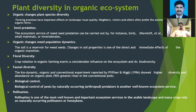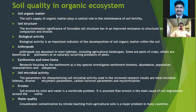Faunal diversity: the biodynamic, organic, and conventional experiment reported by Finnas and Negli showed higher diversity and abundance in organic plots — 90 percent greater than in conventional plots. Biological control of pests by naturally occurring predators is another well-known ecosystem service. Pollination is one of the most well-known and important ecosystem services in the arable landscape, and many crops rely on naturally occurring pollinators or honeybees.